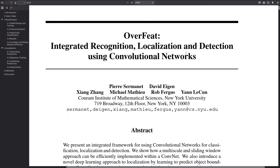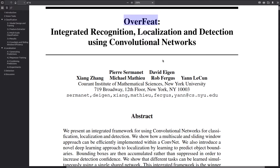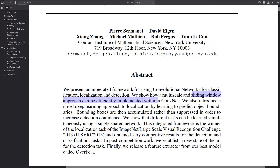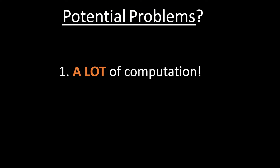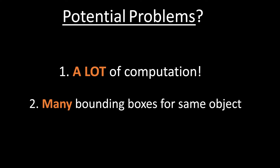The OverFeat paper showed that you can implement the sliding window approach within a ConvNet, so instead of manually cropping each region and sending them individually through the network, you send the image once and obtain sliding window predictions for all regions simultaneously. Even so, the fundamental problem remains: this approach still requires a lot of compute, and you also get many overlapping bounding box predictions for the same object — a problem we'll solve later using non-max suppression.